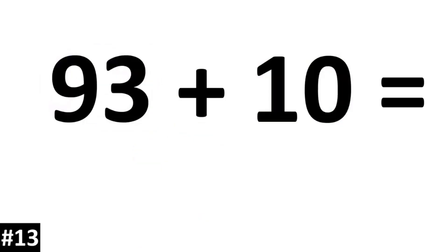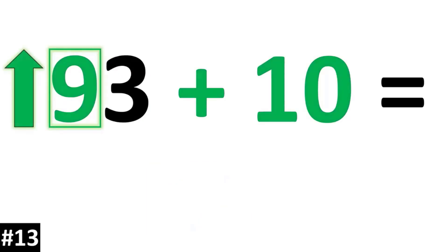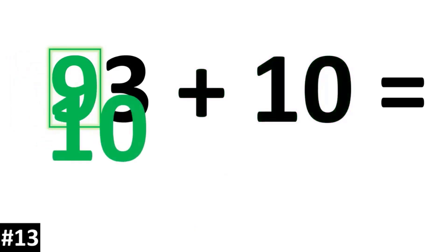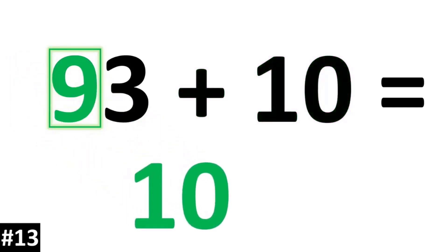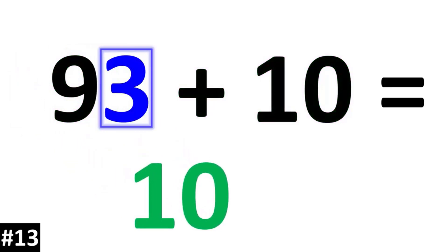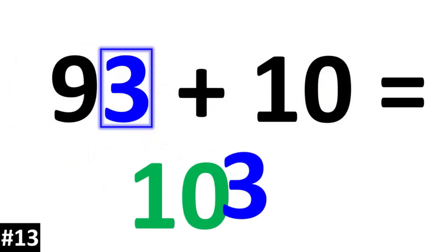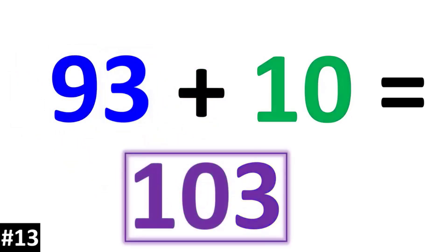93 plus 10: the 9 as the tens digit is going to go up by 1, so the 9 is going to become a 10. The ones digit of 3 stays the same, and we have 103.